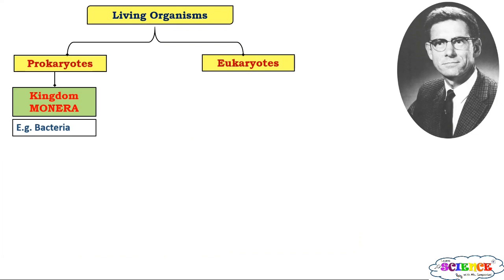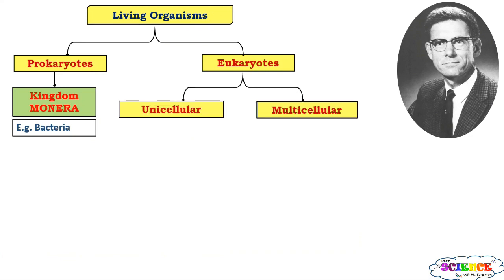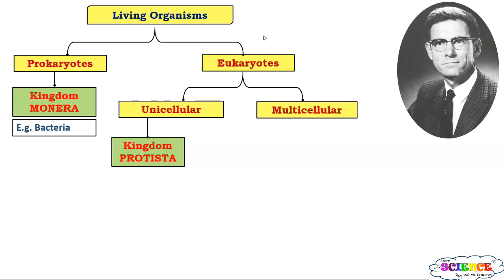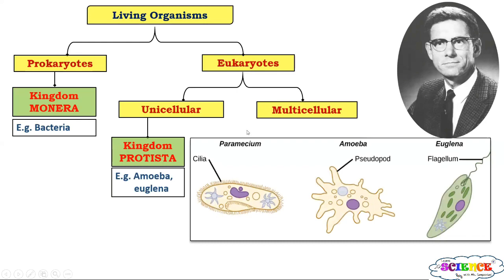Eukaryotes were further classified into two types — unicellular and multicellular — on the basis of the structure of the organism. Whittaker made one more kingdom, the second kingdom, that is Kingdom Protista, which included all organisms that are unicellular and eukaryotic. Organisms with a well-defined nucleus that are unicellular are in Kingdom Protista. Examples are amoeba, paramecium, euglena, etc. They have a nucleus but they are unicellular organisms.